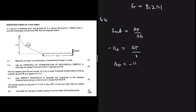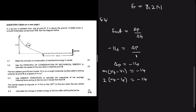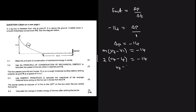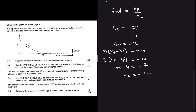Delta P equals m times (vf minus vi) equals minus 14. The mass is 2 kg and the initial velocity is the previous vf of 4 meters per second. So: 2 times (vf minus 4) equals minus 14. Dividing both sides by 2 gives vf minus 4 equals minus 7, therefore vf equals minus 3 meters per second.